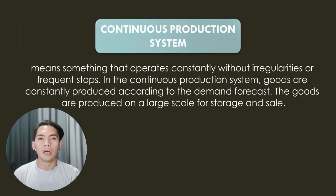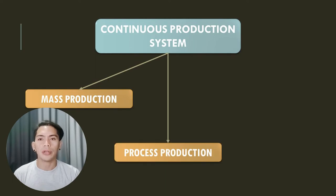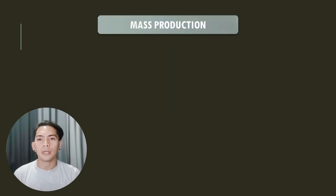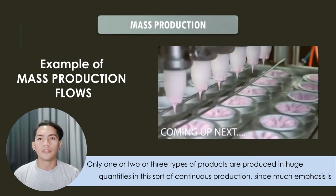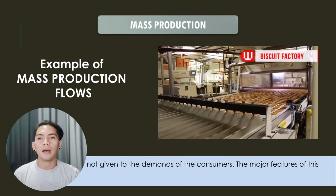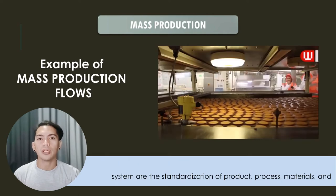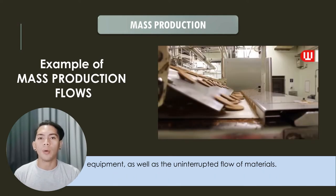The second category of production system is continuous production system. Continuous means something that operates constantly without irregularities or frequent stops. In the continuous production system, goods are constantly produced according to the demand forecast on a large scale for storage and sale. There are three types: first is mass production, second is process production, and third is assembly production. In mass production, only one, two, or three types of products are produced in huge quantities, with much emphasis not given to the demands of customers. The major features of this system are standardization of product, process, materials, and equipment, as well as uninterrupted flow of product or materials.